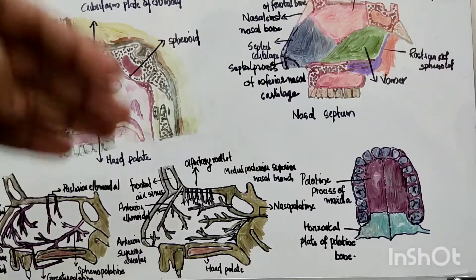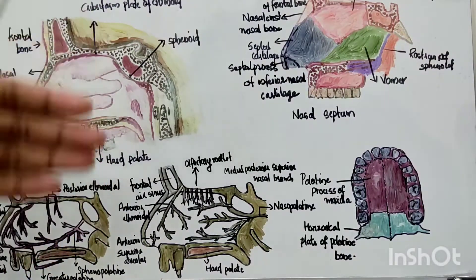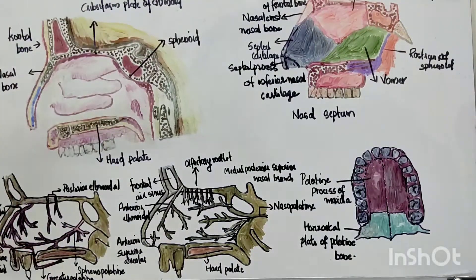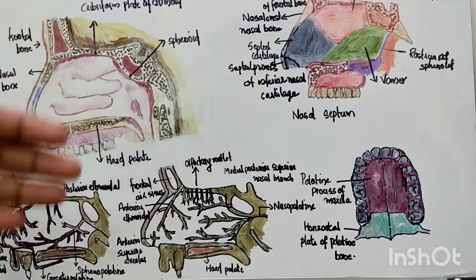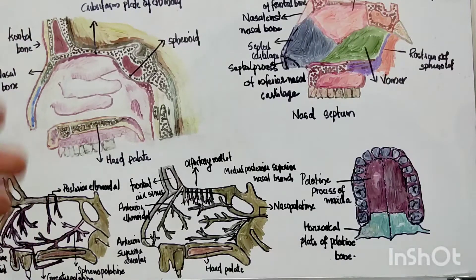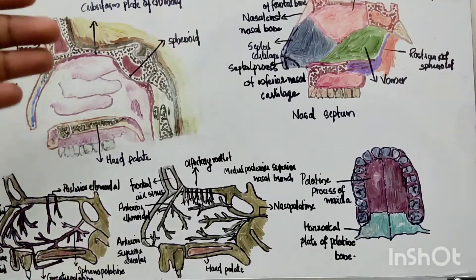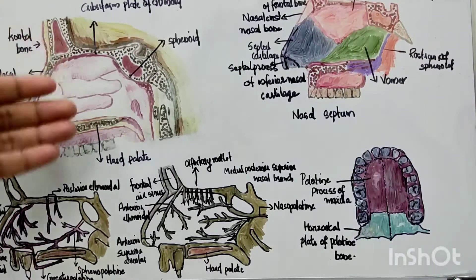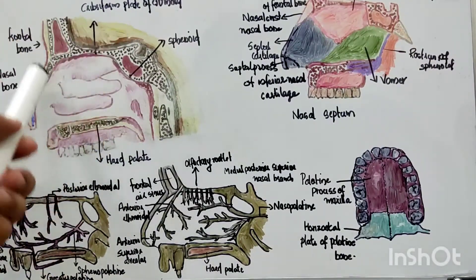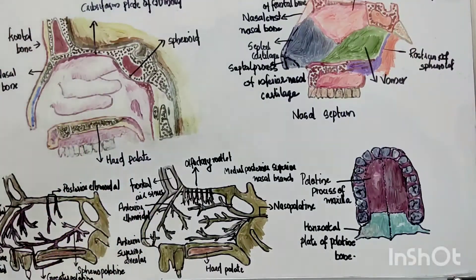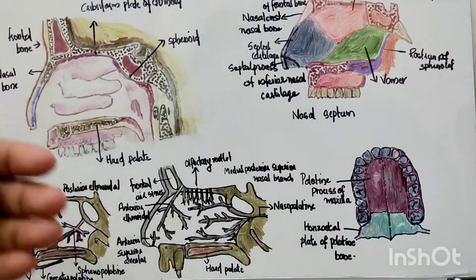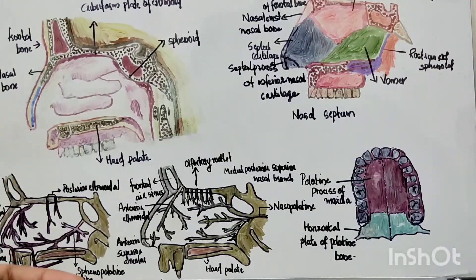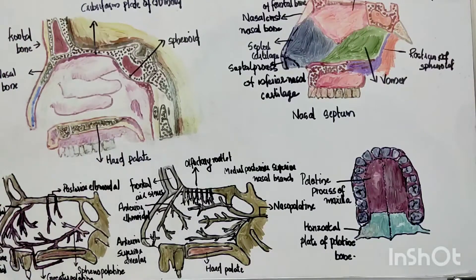The nasal cavity is divided into right and left halves by the nasal septum. That is, we have two nostrils divided by the nasal septum. Each half has a roof, a floor, a median wall, and also a lateral wall.